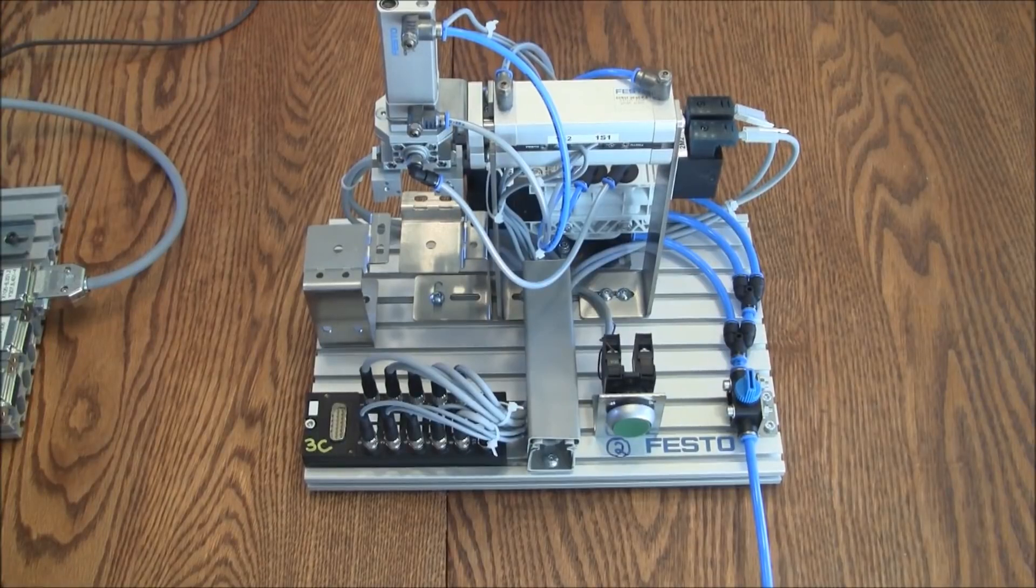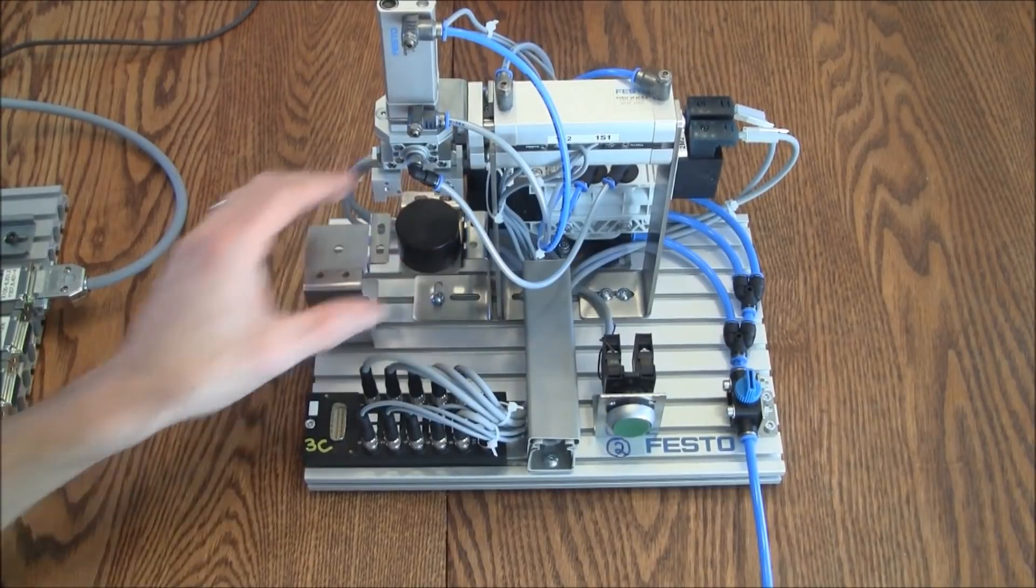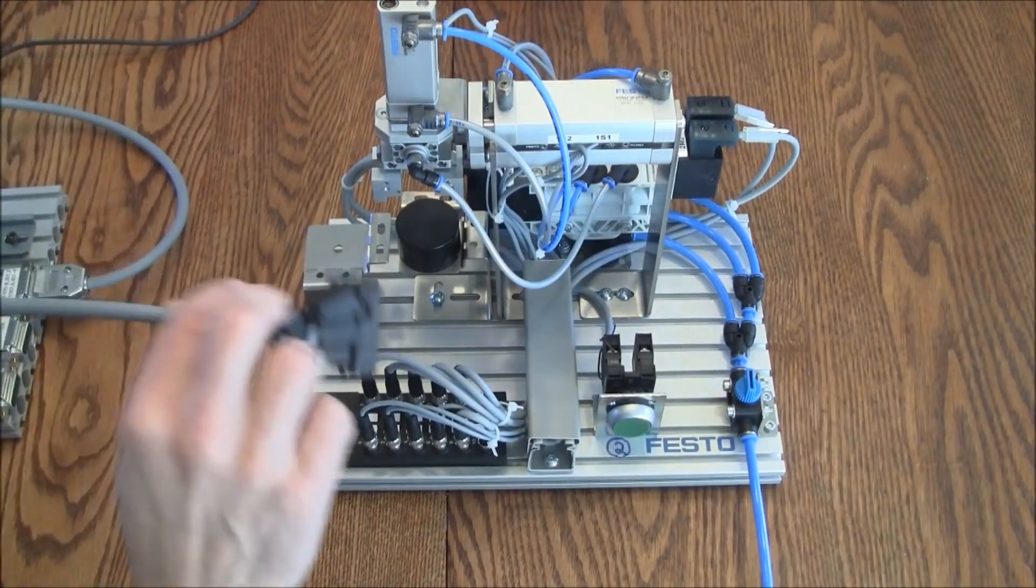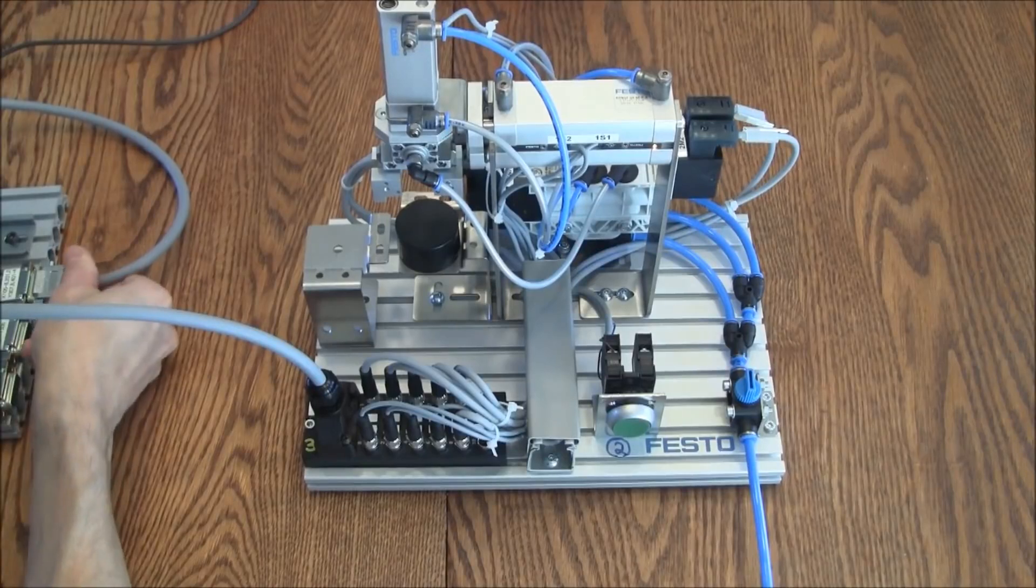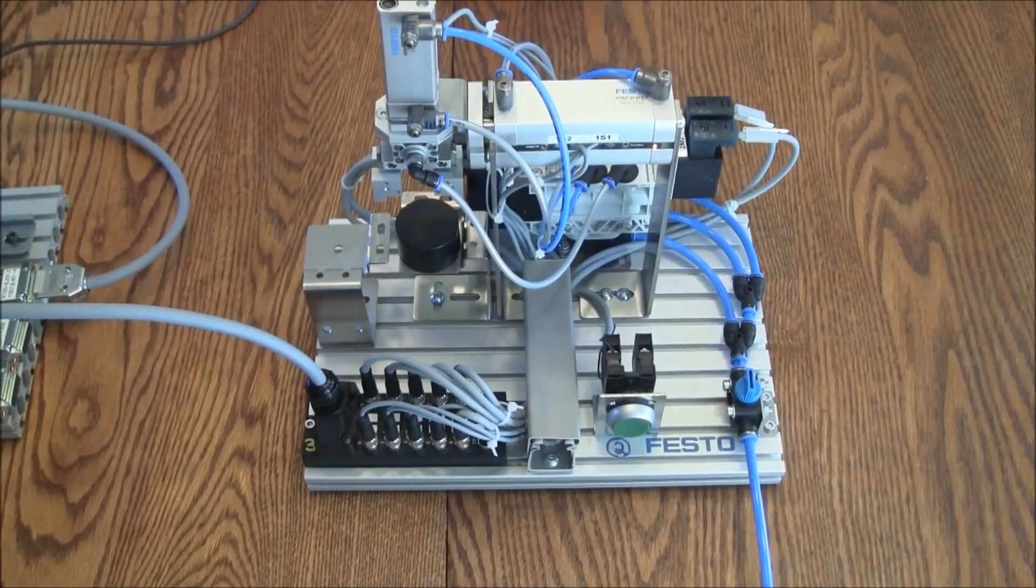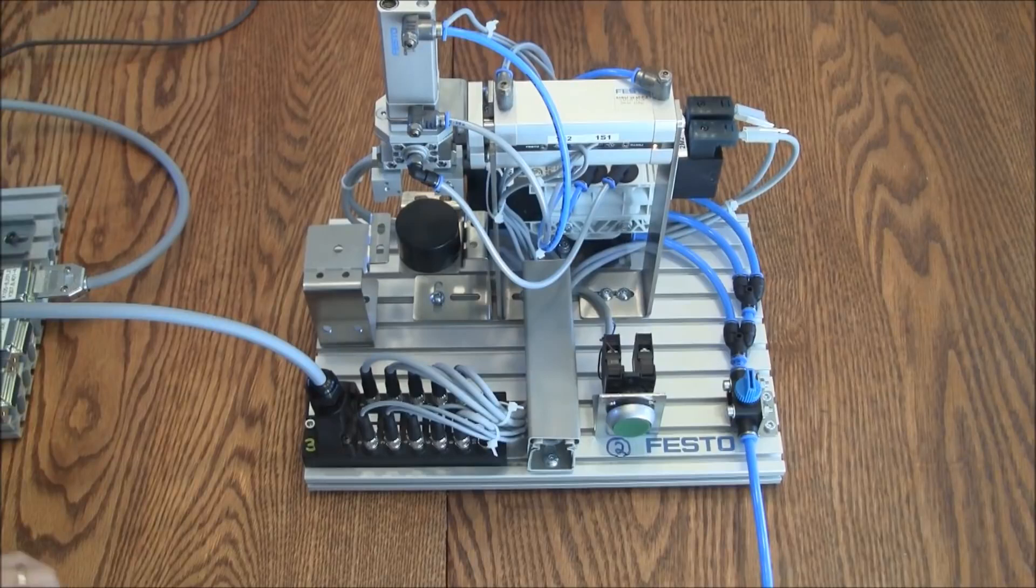So let's take a look at the basic operation of this Mechlab. I'm going to connect it up to the PLC. I'm using the Automation Direct PLC to control this. The program's already in and running.